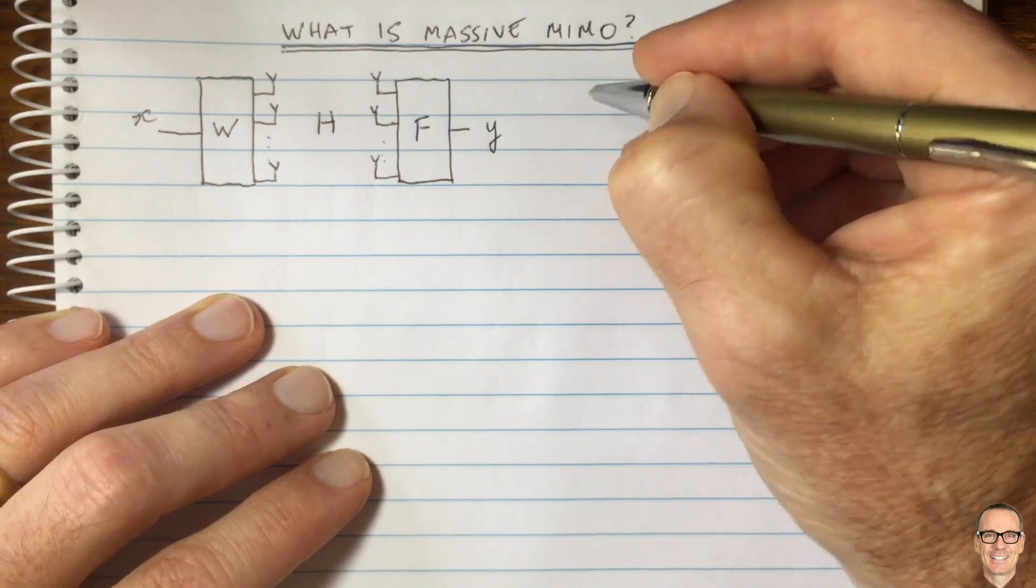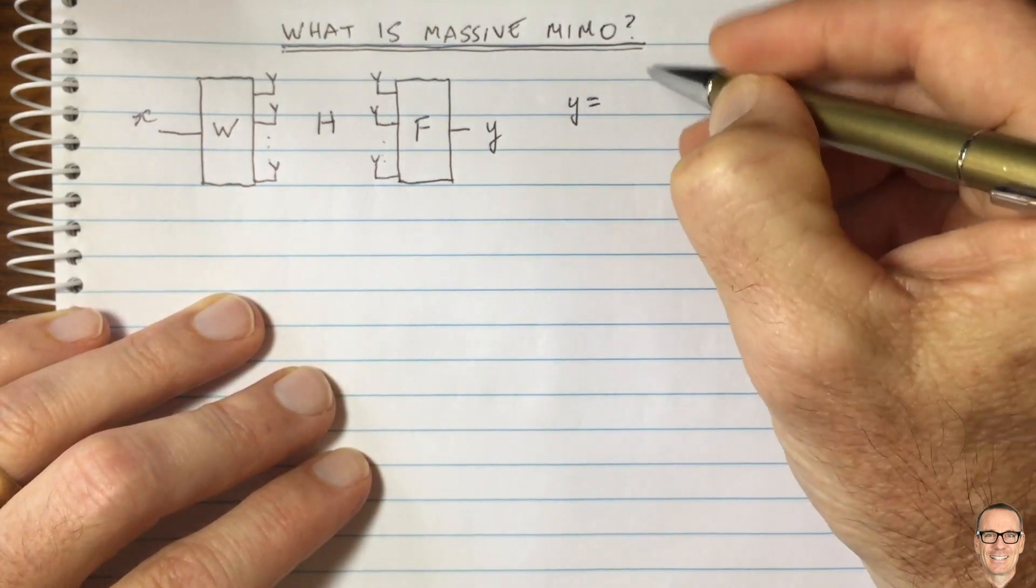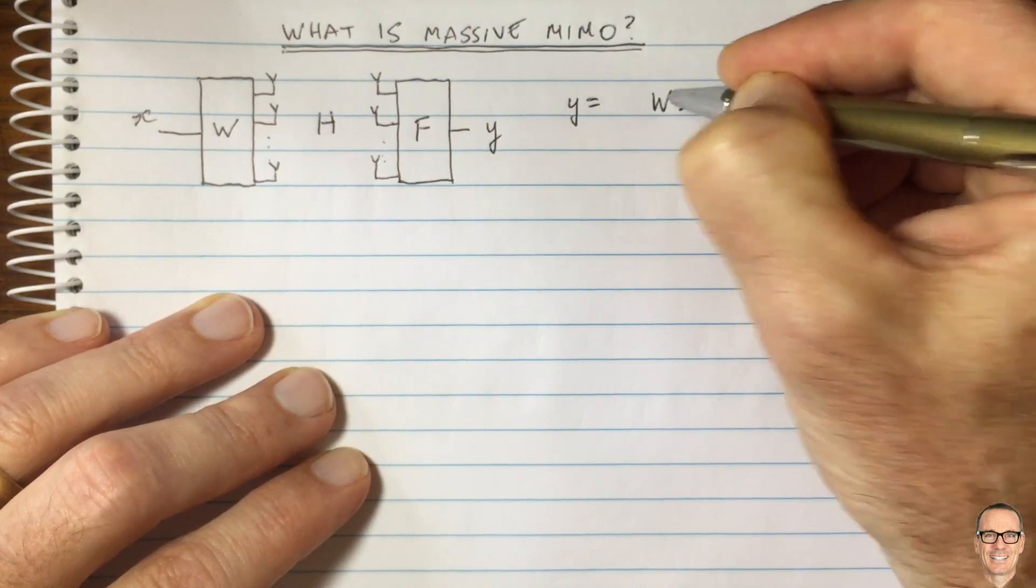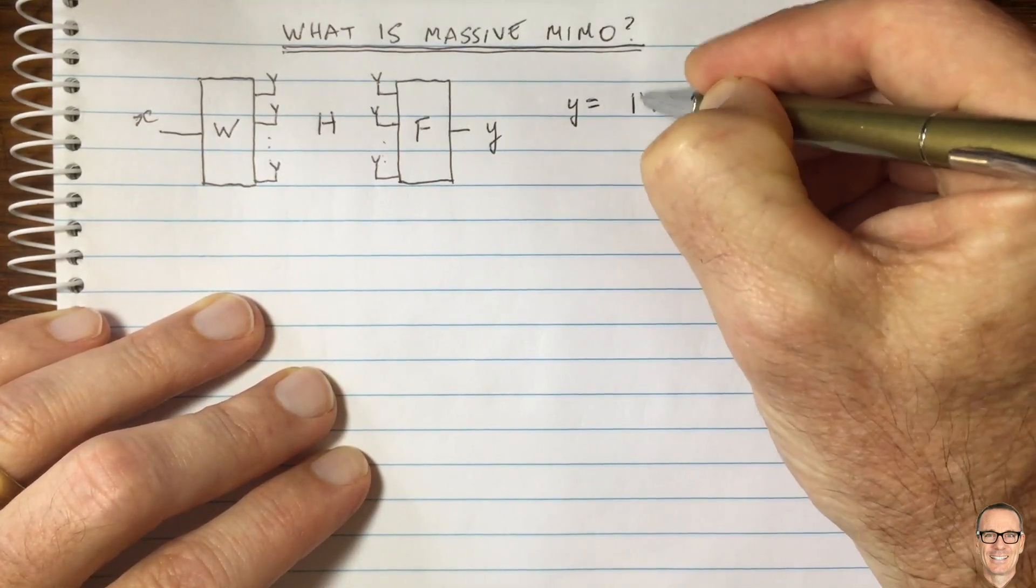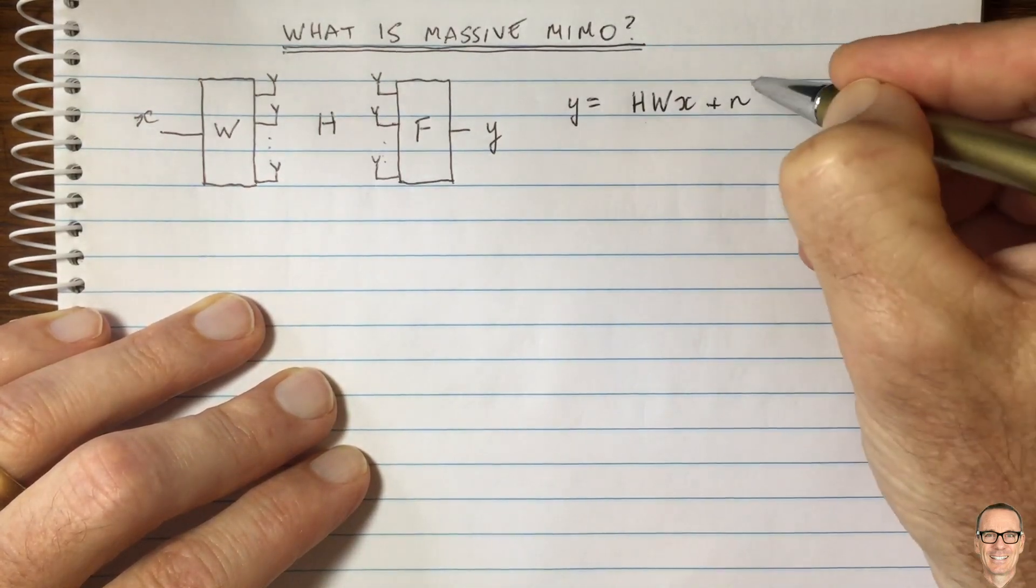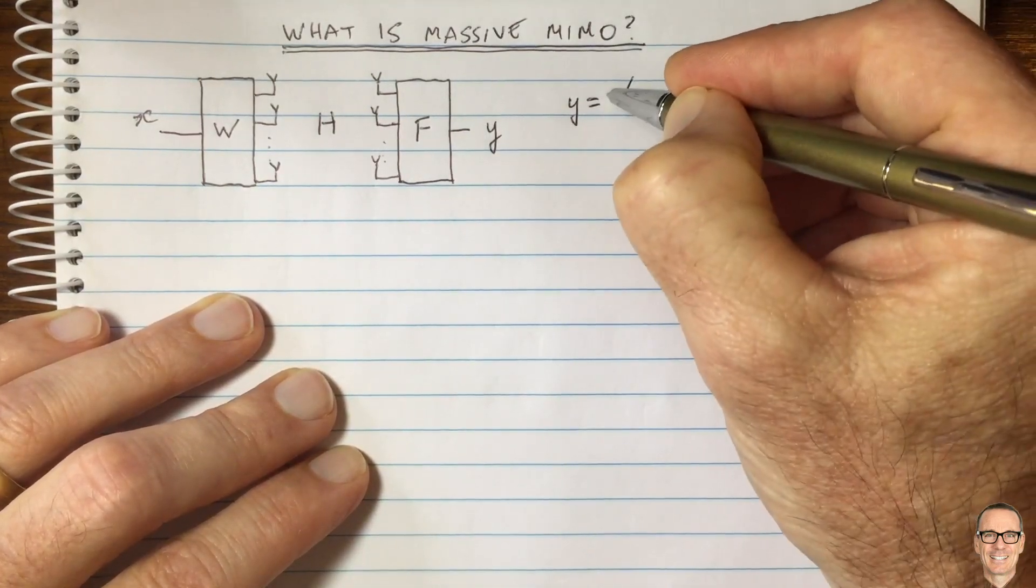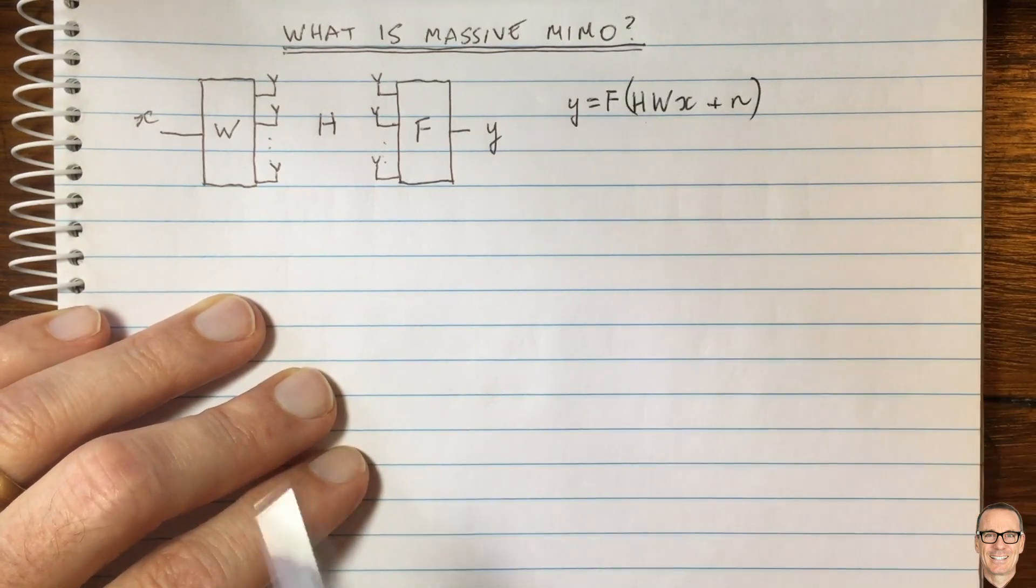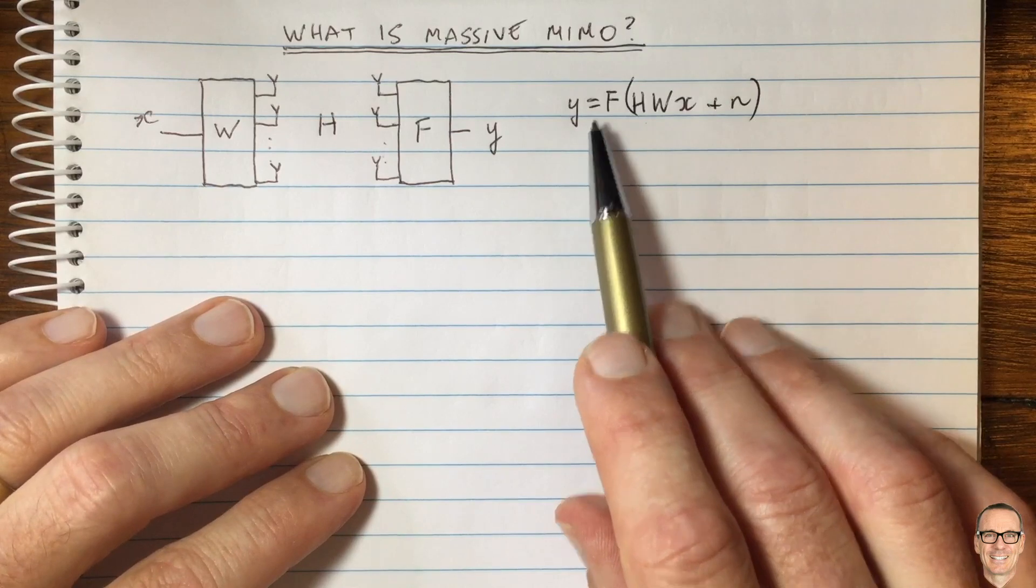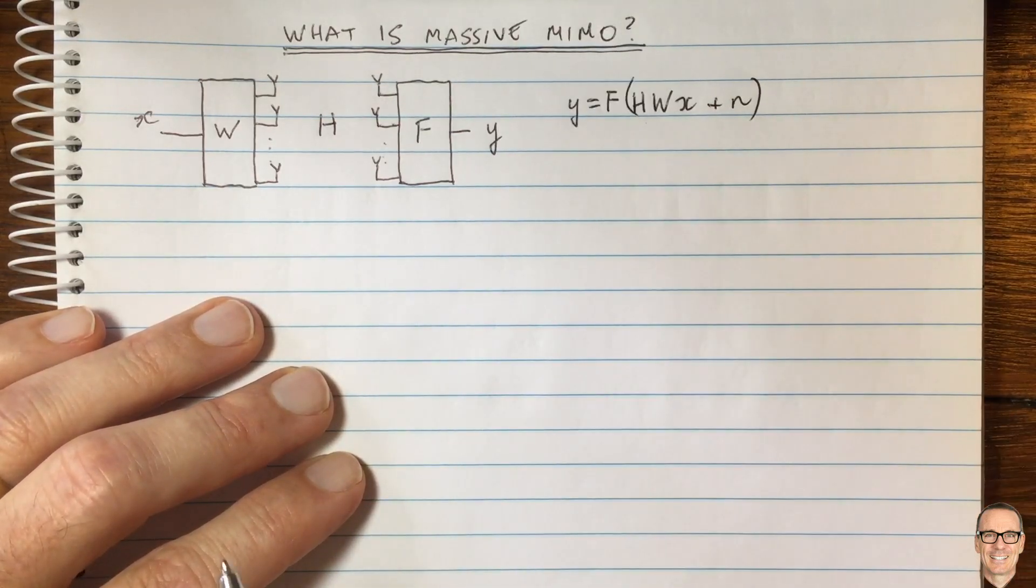This is a standard and familiar digital communications channel. X gets multiplied by matrix W, goes through the channel H which is a matrix, the noise is in the receiver, and then in the receiver processing you can multiply by a matrix F. There's a link below this video for more information about MIMO.